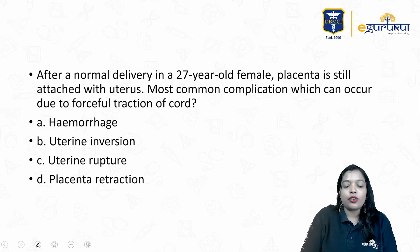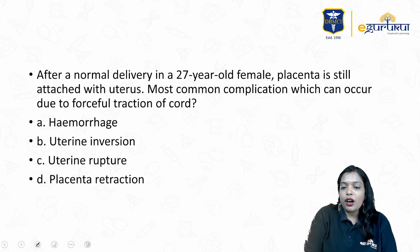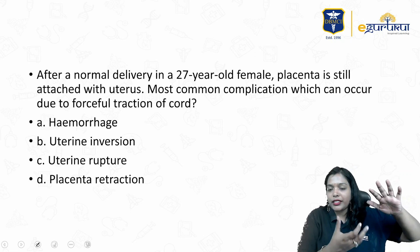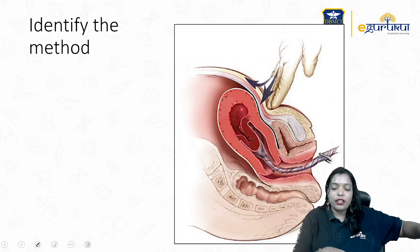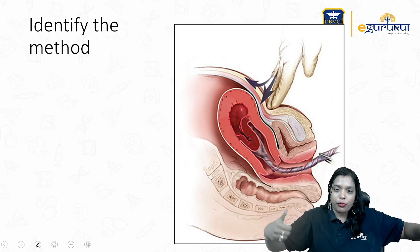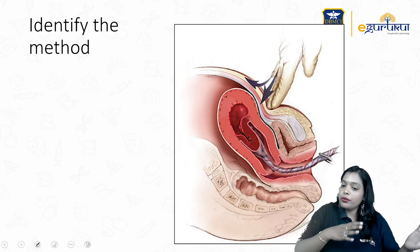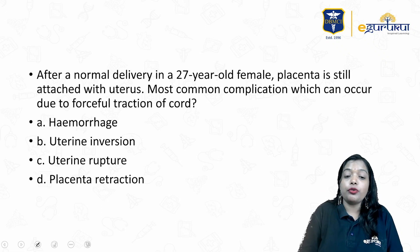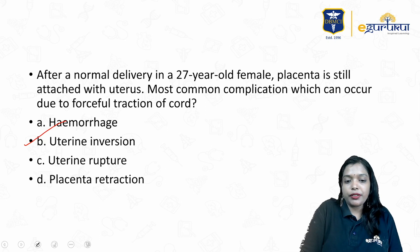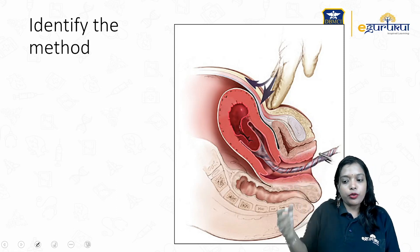MCQ 4: After a normal delivery in a 27-year-old female, the placenta is still attached to the uterus. What is the most common complication due to forceful traction of the cord? Normally we separate the placenta after it has separated using the Brandt-Andrews method — controlled cord traction — where you place one hand on the abdomen and with the other hand hold the cord and do a to-and-fro motion. If you skip placing that hand and just pull the placenta, the uterus can come out along with it, leading to uterine inversion. Sometimes the cord can also break, requiring manual removal of the placenta.